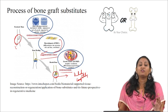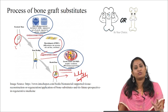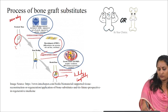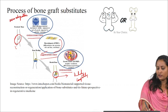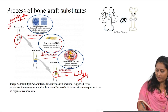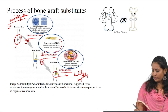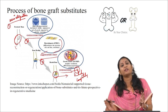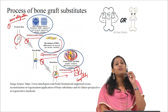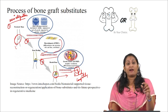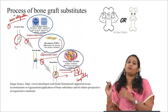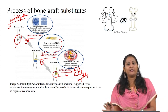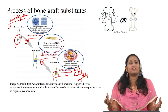Any ideal bone graft should have three — in fact four — major processes: osteointegration, osteoconduction, osteoinduction, and osteogenesis. All four processes are needed to develop a bone graft that can enhance and repair bone defects without side effects, heal completely, and accelerate wound healing.